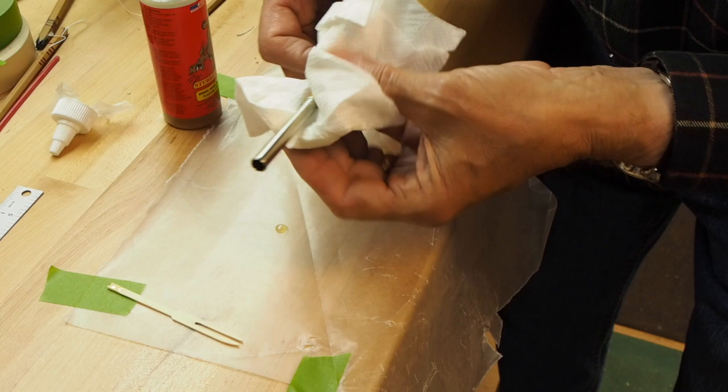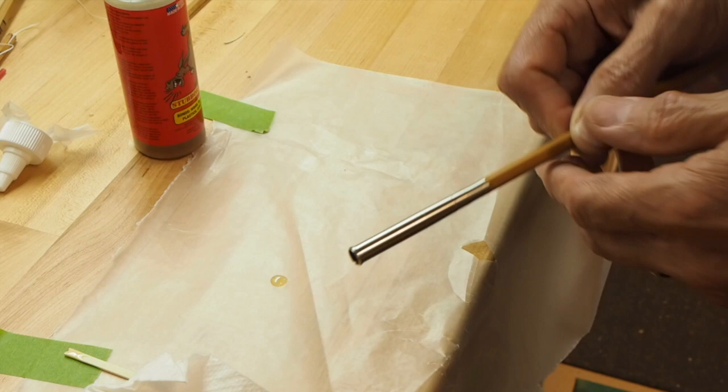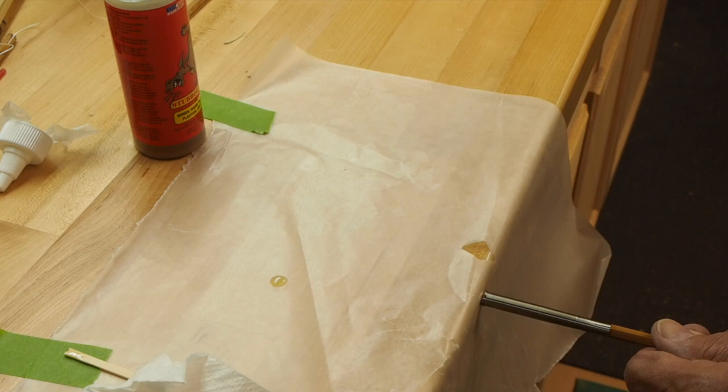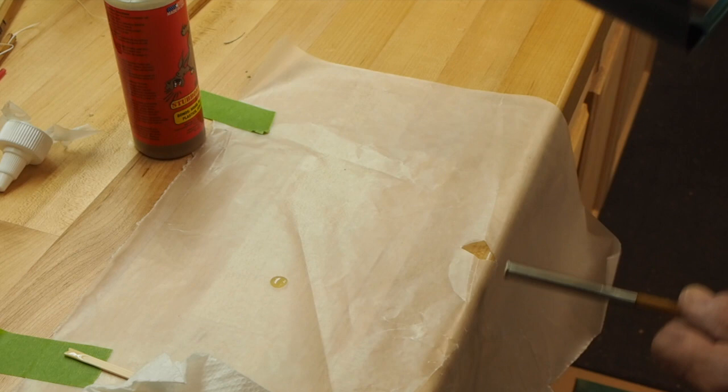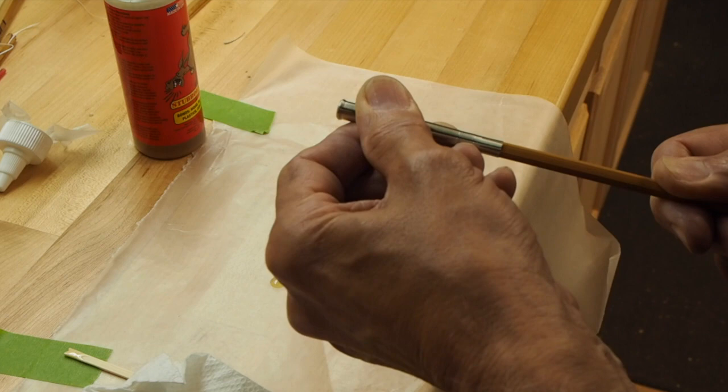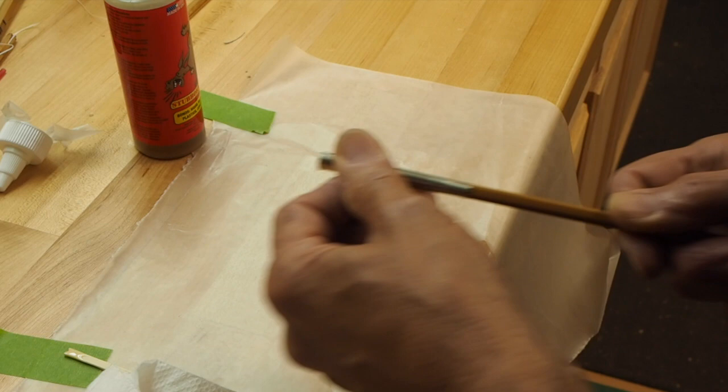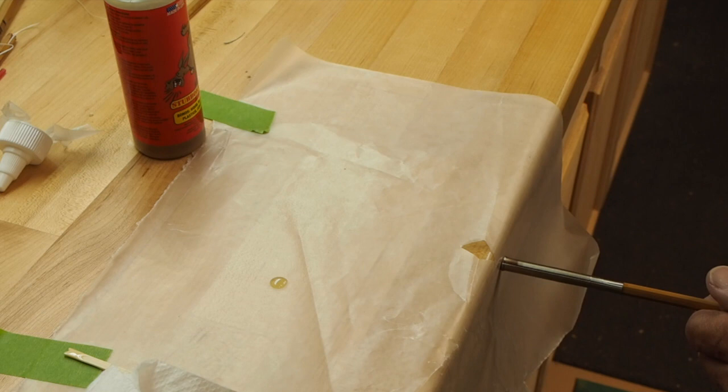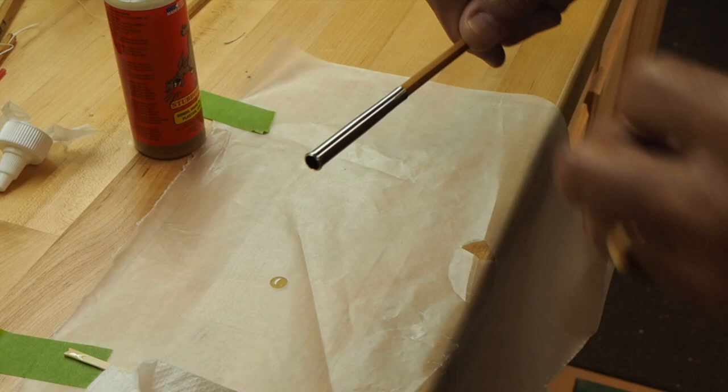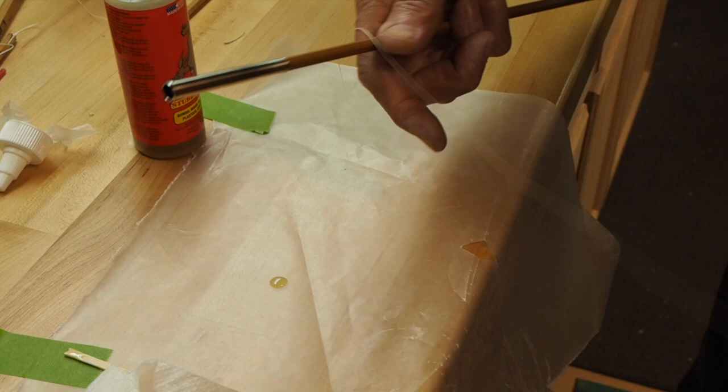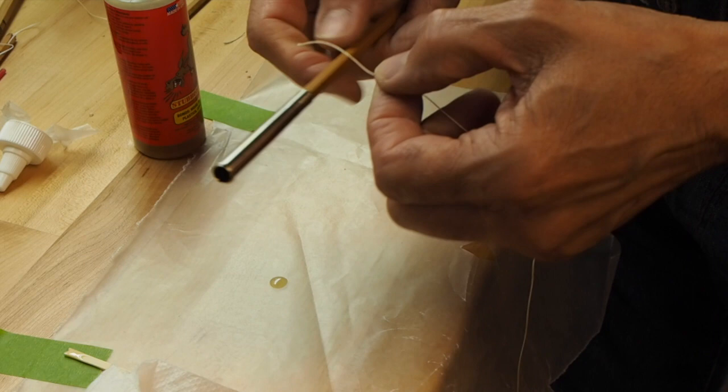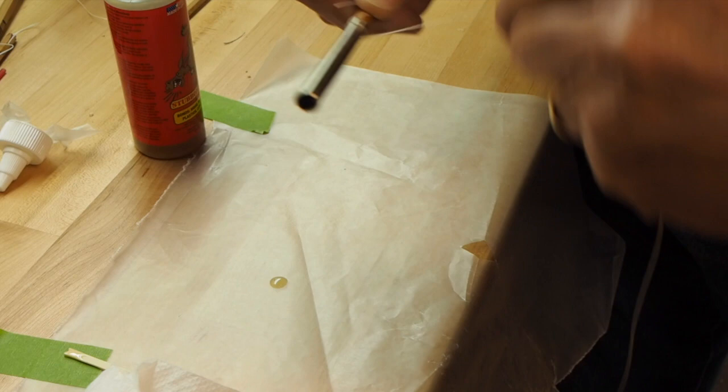And I will push to make sure that the ferrule is fully seated while also making sure that the serrations on the ferrule are lined up with the points along the rod. And now I will tightly wrap the end of the ferrule with some twine to make sure I get a good bond on the serrated sections.